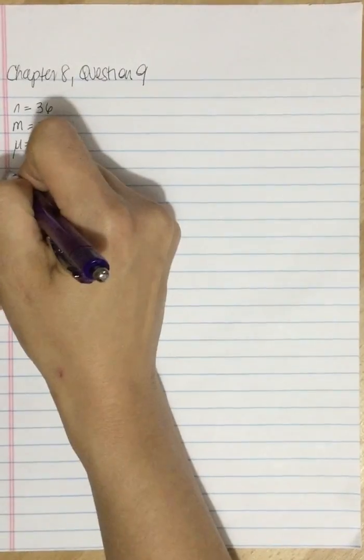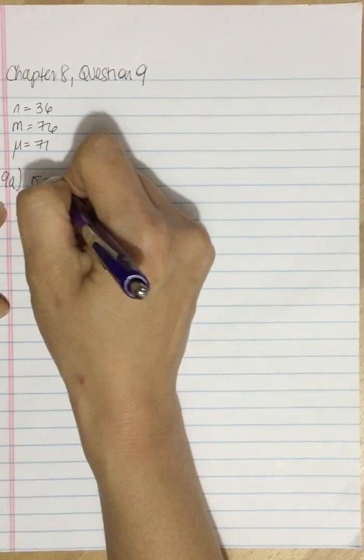Question 9a, if the final exam scores for the population have a standard deviation of sigma equals 12, does the sample provide enough evidence to conclude that the new online course is significantly different from the traditional class?